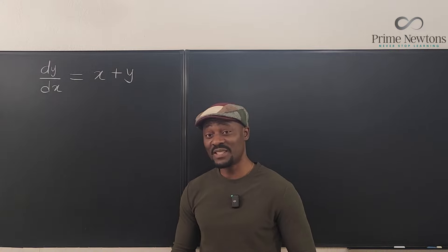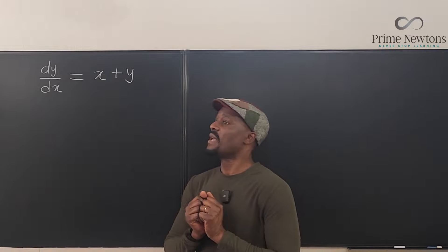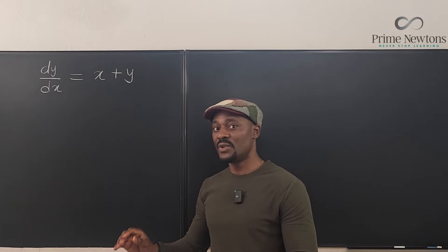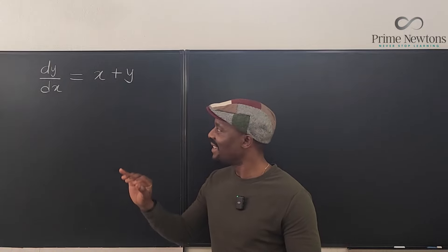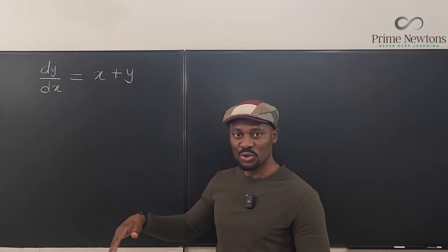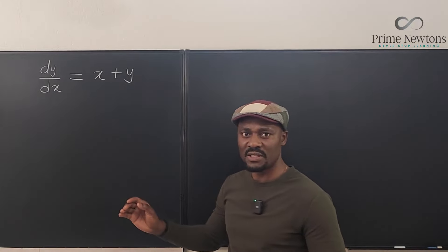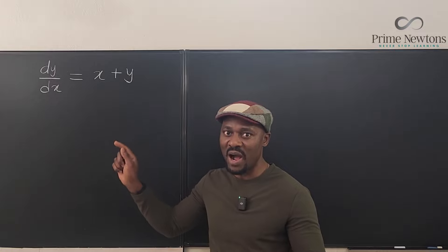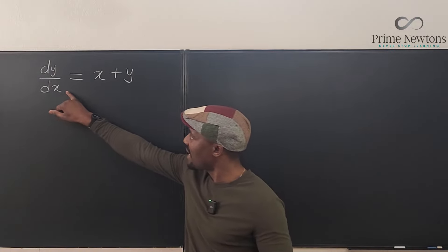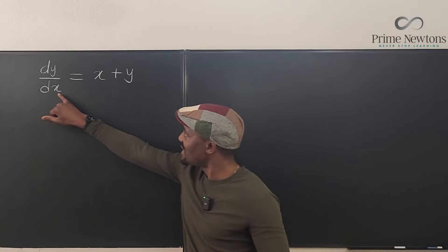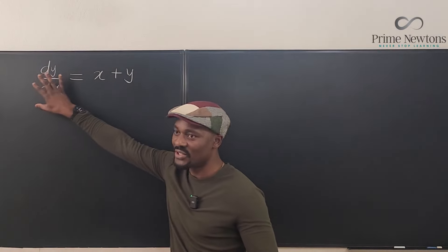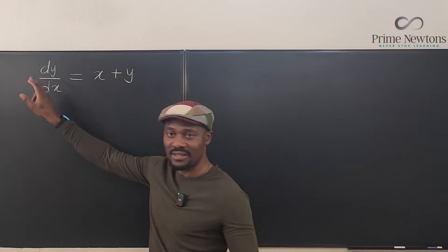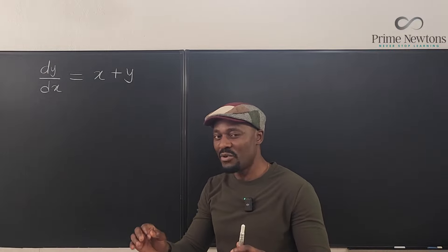Welcome to another video. Let's solve this differential equation in a very general manner. This equation at first sight looks as if you could separate the X from the Y and just integrate — treat it as a separable differential equation by moving the Y to that side. But the more you look into it, the more you realize you cannot separate X from Y, because you have to first multiply both sides by DX, and this DX is attached to both X and Y. So even when you move Y to this side, DX is still stuck to it. You can't separate X from Y.